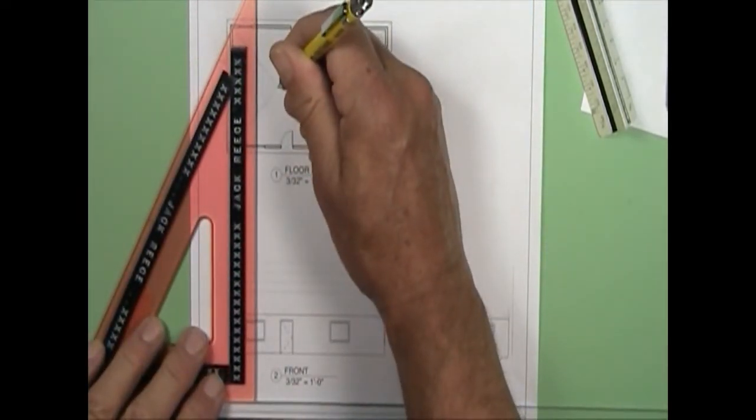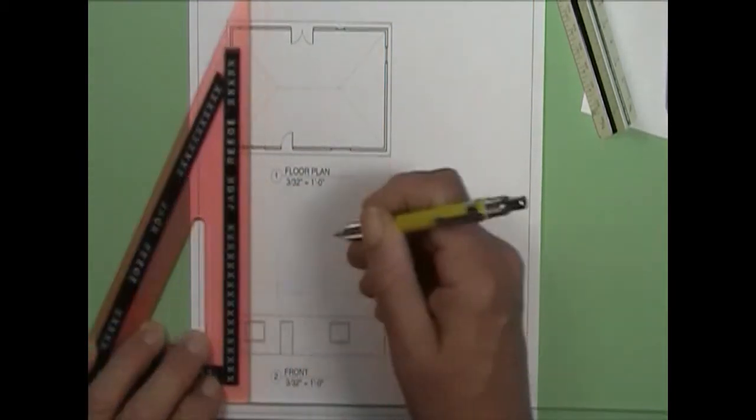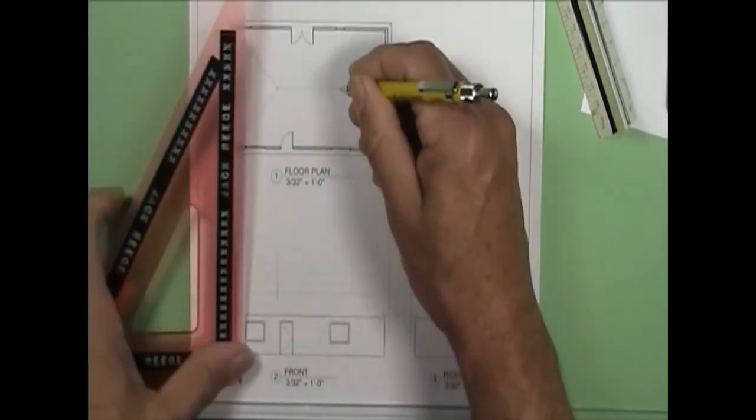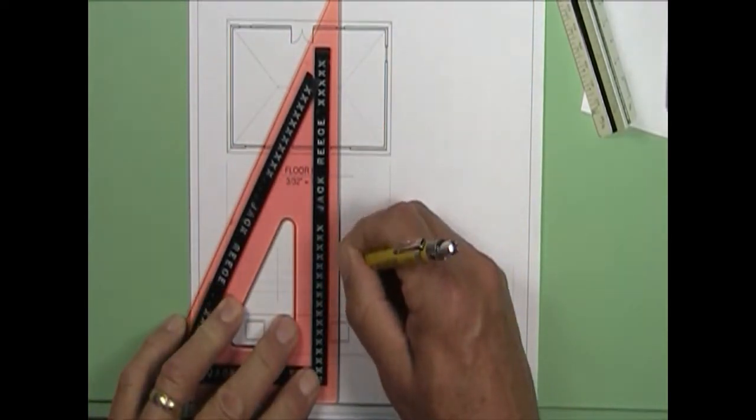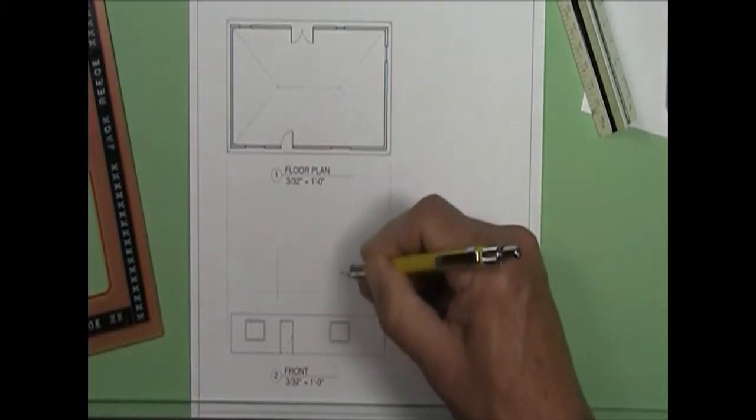So I can take from here and project down into my front view. And that will be the intersection of the hips and the ridge at each of these different roof elevations.